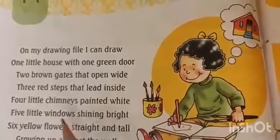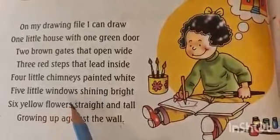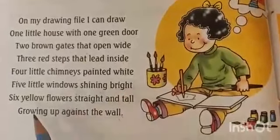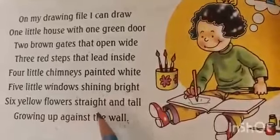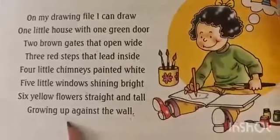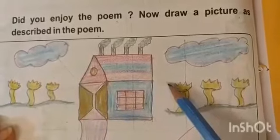Now we will draw a picture here. We will speak out the poem rhythmically once again: On my drawing file, I can draw one little house with one green door, two brown gates that open wide, three red steps that lead inside, four little chimneys painted white, five little windows shining bright, six yellow flowers straight and tall growing up against the wall. Now you will learn this poem and draw a picture of the house. Thank you.